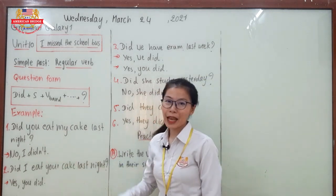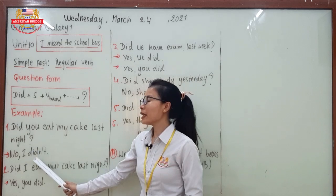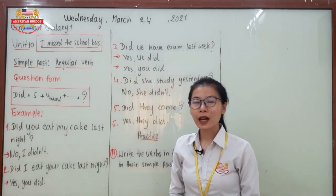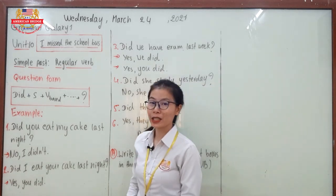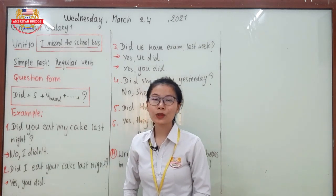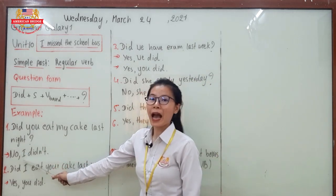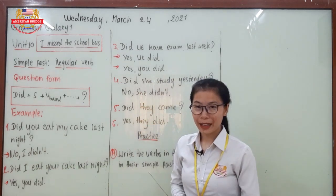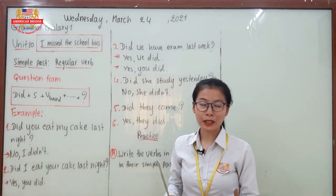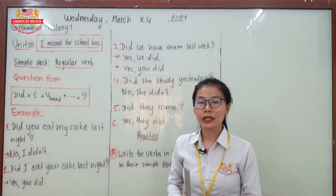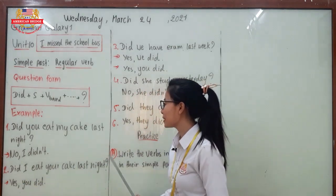Let's look at an example: 'Did you eat my cake last night?' You might answer: 'No, I didn't.' You can pronounce it 'didn't' or 'didn't' — two syllables. When the question starts with 'you,' the answer should be 'I.' And when the question starts with 'I,' as in 'Did I eat your cake last night?' the answer should be 'you.'